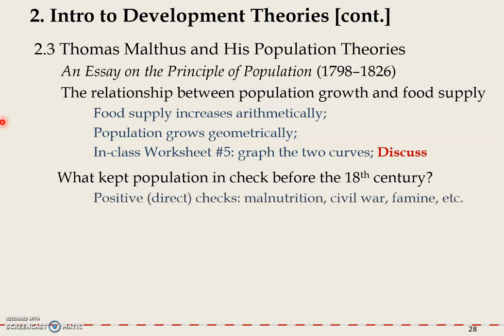He came up with two types of checks. The first one is what he called positive or direct checks, including malnutrition, civil war, famine, etc. These things could directly reduce the number of people. The second type is called preventative checks, including late marriage, celibacy, etc.